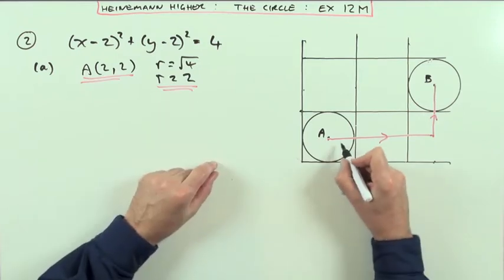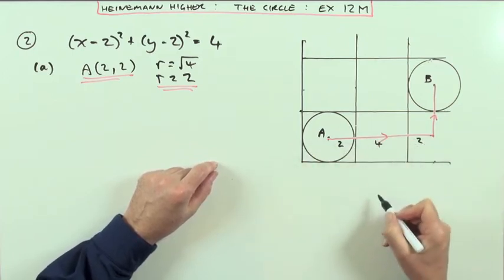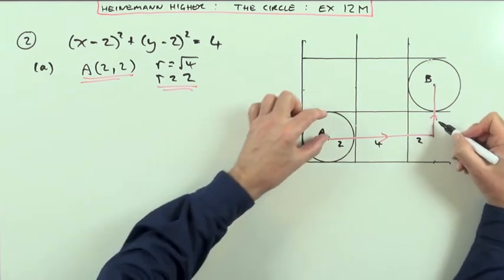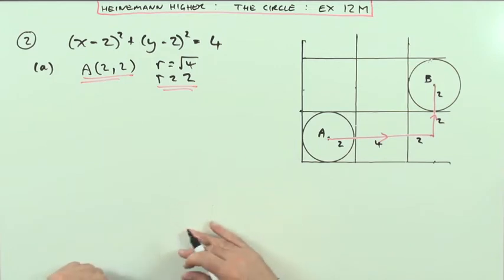I know the radius is two, so that distance must be the whole distance four, and that must be another two. Same up the way: that's the radius two, and that circle fits inside the same square, so that's two, which means I can do this.